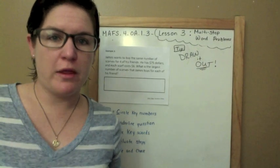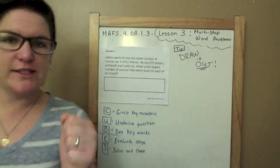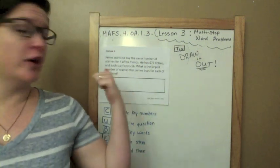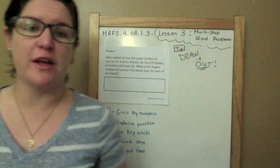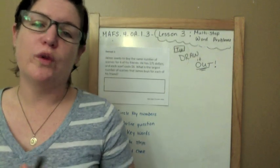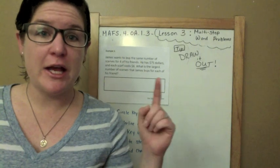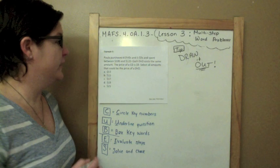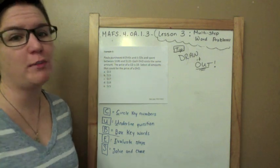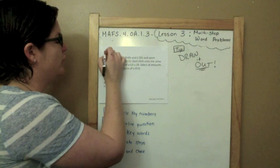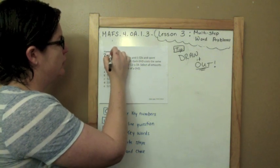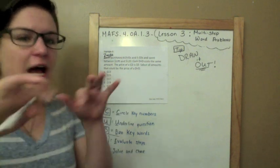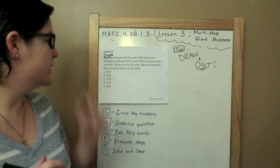What's up YouTube math world, this is how to pass the FSA, the fourth grade edition. Today we're working on our third standard, MAFS.4.OA.1.3, which is lesson three, multi-step word problems. We're not using Paula today, we're going to use one of my YouTube friends Zeta.